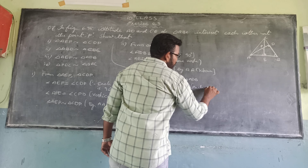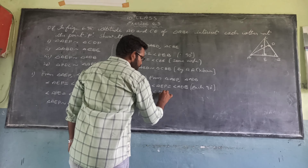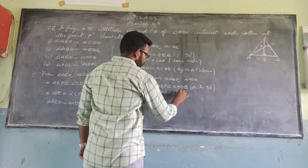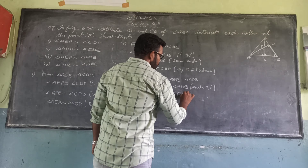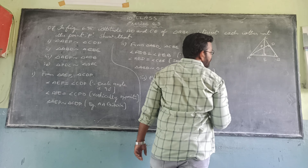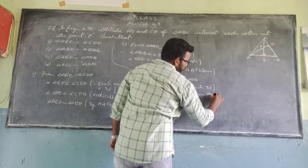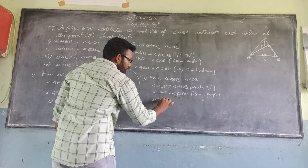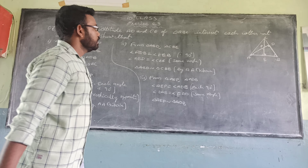Also, angle DAB is equal to angle EAD because this is the same angle in both triangles. By using the AA (angle-angle) criterion, we can say that triangle AEP is similar to triangle ADB.